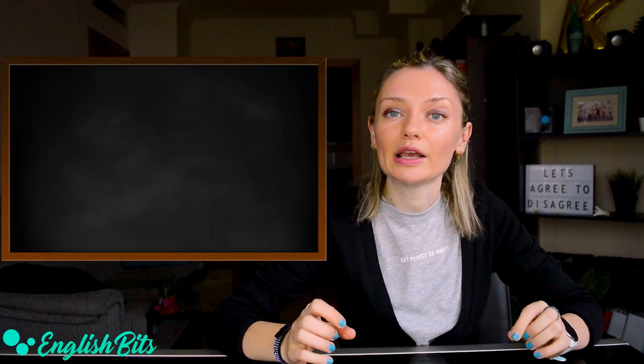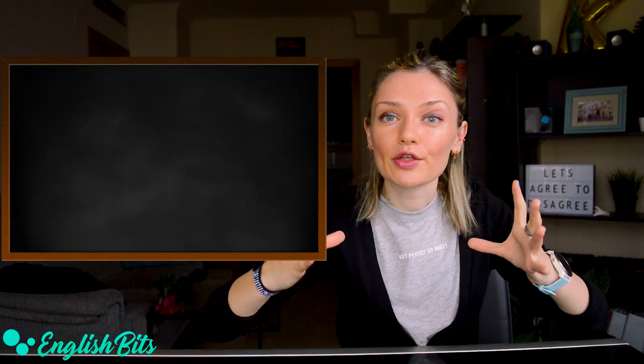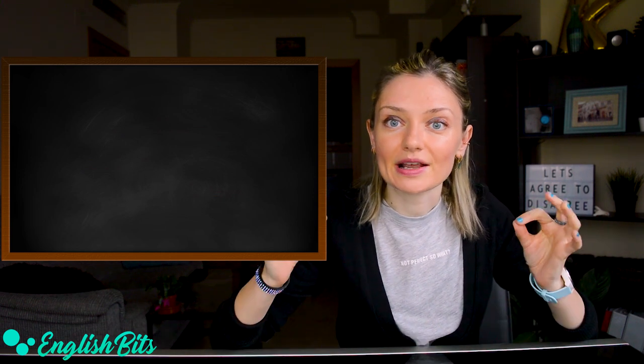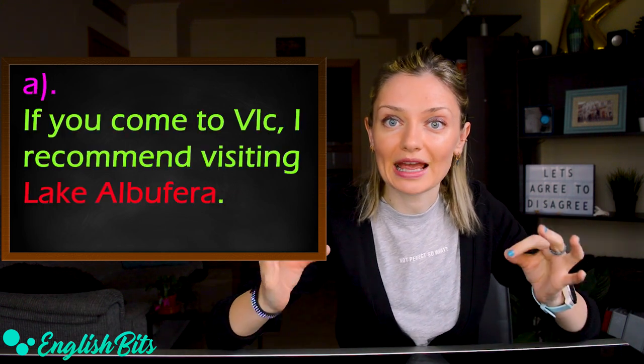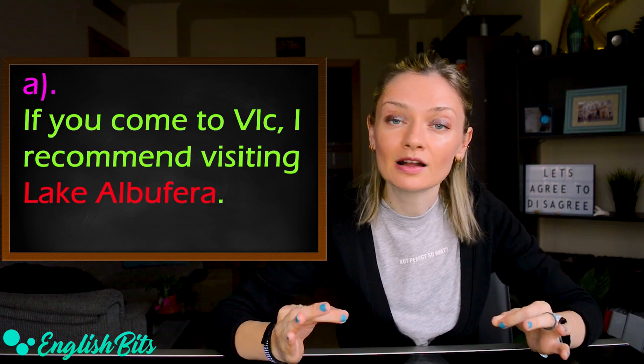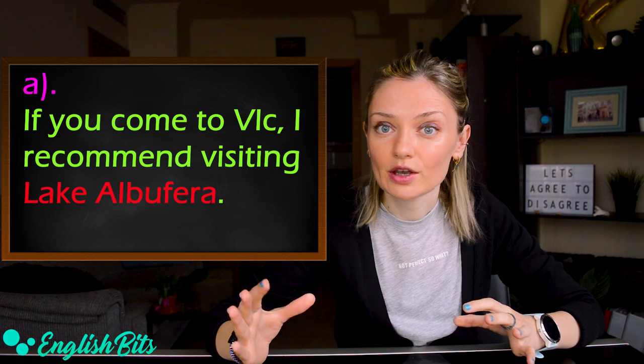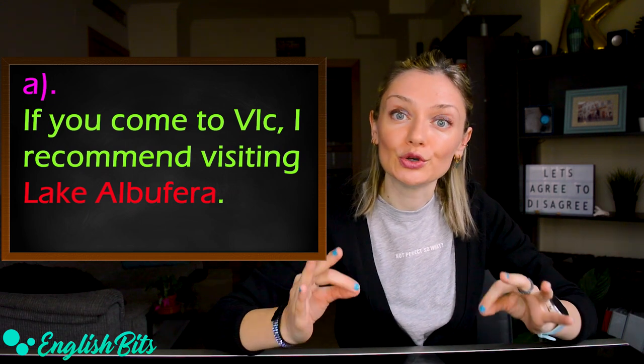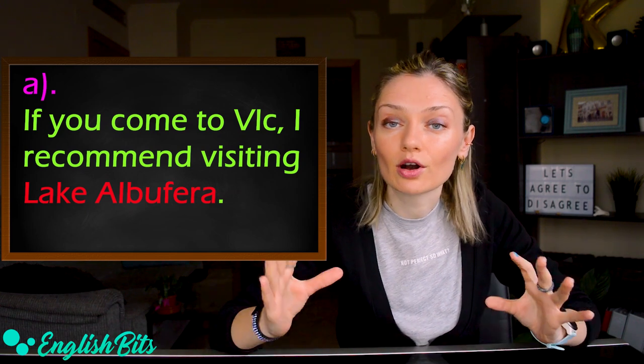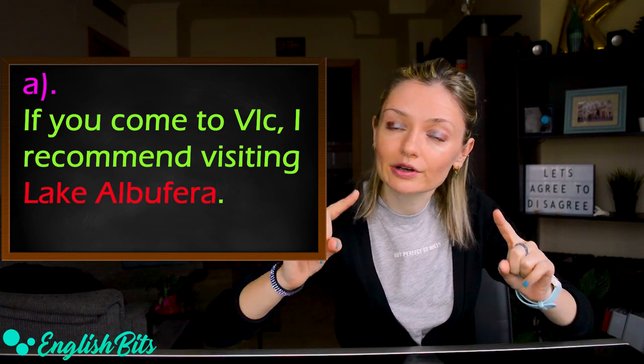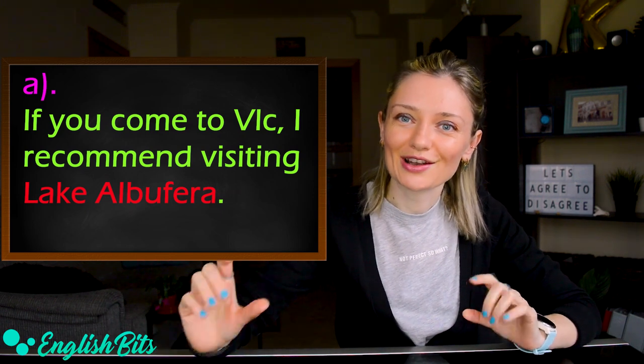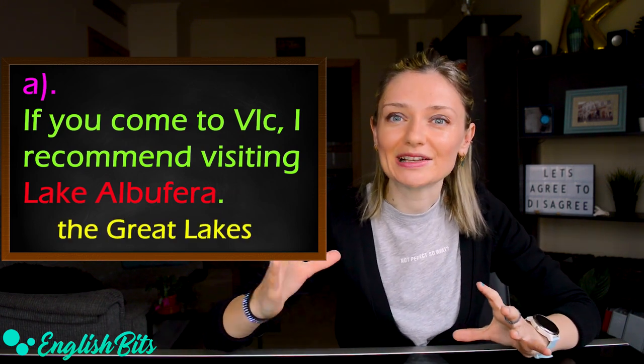Before we start, I'm going to give you the correct answer to the bonus question from the grammar quiz. And the correct answer is A: If you come to Valencia, I recommend visiting Lake Albufera. So in English, we don't use the definite article before the names of lakes. However, it's used before groups of lakes, for example, the Great Lakes.